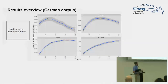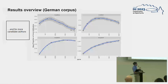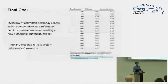The same goes for candidate authors. With two candidate authors, using a very wide selection of most frequent words does not work well. But it becomes a good idea once you have sixteen authors for your analysis.